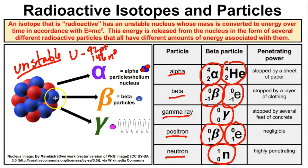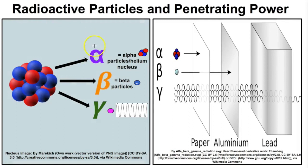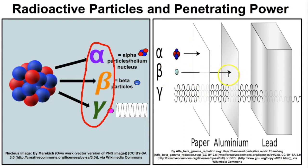Let's look at the penetrating powers of these different radioactive particles. Alpha particles are deflected by a thin sheet of paper and won't pass through. Beta particles pass through paper but are stopped by a thin sheet of aluminum foil. Gamma rays are super high frequency, super high energy electromagnetic radiation — they pass through paper, through aluminum, and can even work their way through skin, causing damage to cellular tissues due to their ionizing properties, which means they strip electrons off atoms. It takes several centimeters or inches of lead to stop gamma rays.